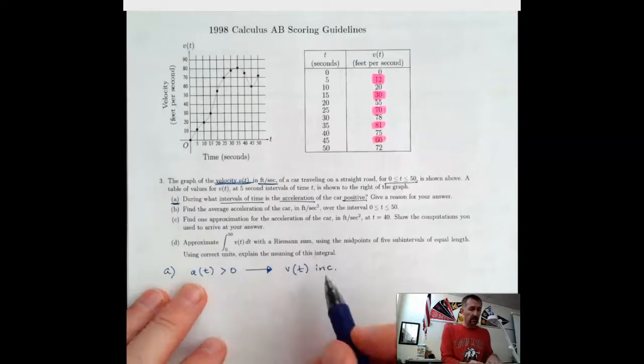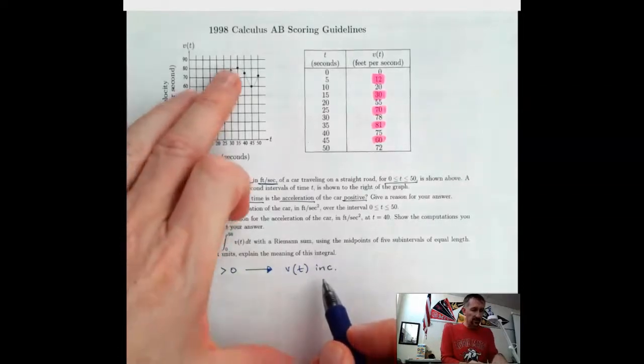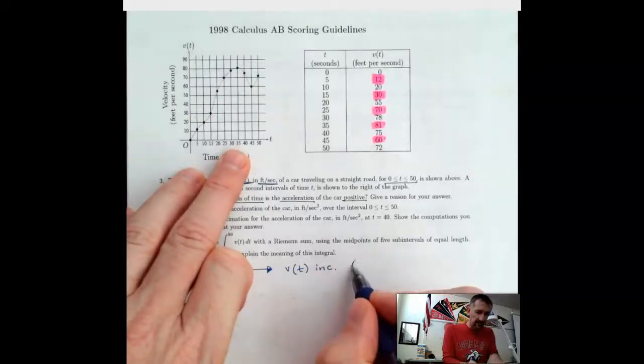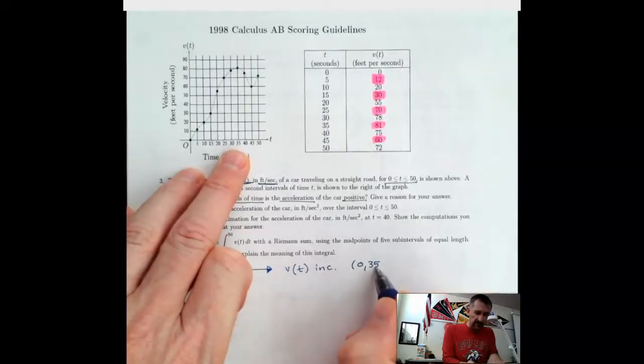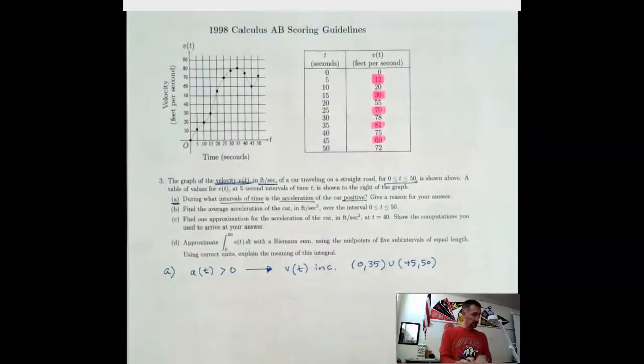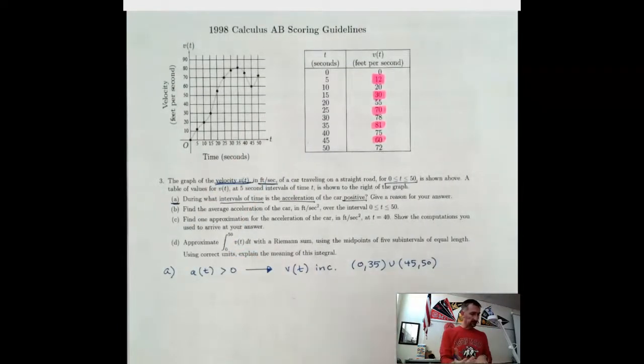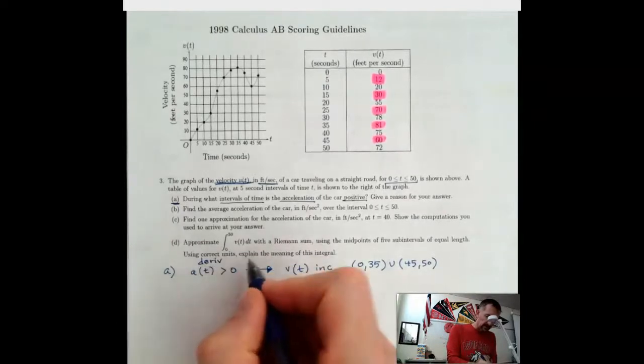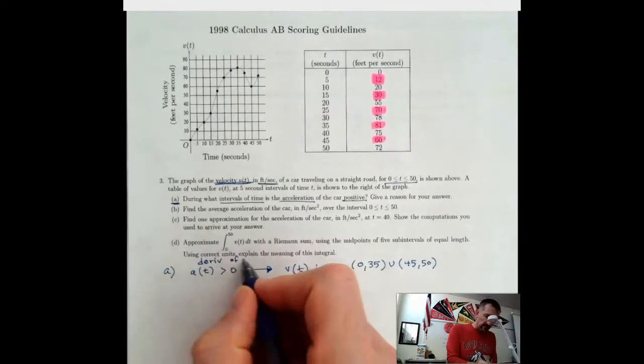So that's what we're looking for. The velocity is increasing from 0 to 35, so 0 to 35, and then again from 45 to 50. And that's because acceleration is the derivative of velocity.